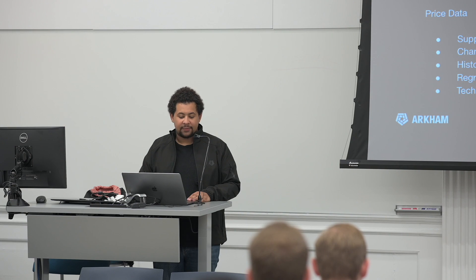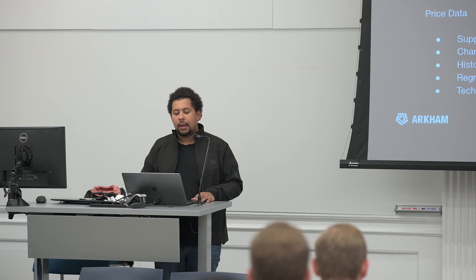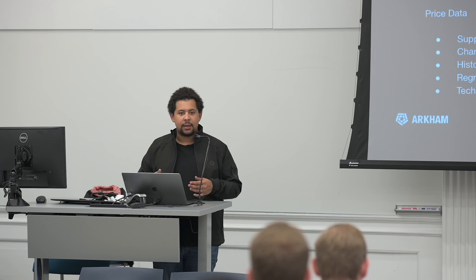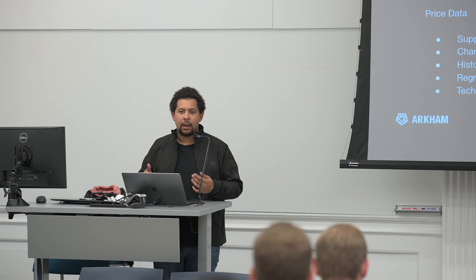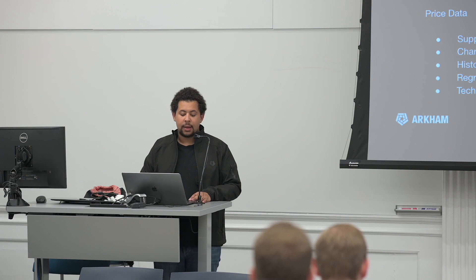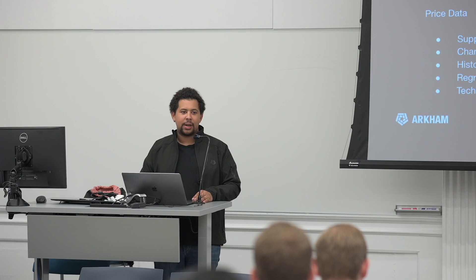The first is asset fundamentals: investing or trading a particular asset based on things such as how good the product is, traction, balance sheet data, the executive team, central bank policy, macro — these kinds of things. This is the more Warren Buffett style of investing. The second paradigm is trading based on price data, or technicals — the technical analysis style, familiar from screenshots on Twitter of people trading based on green and red bars and chart patterns.